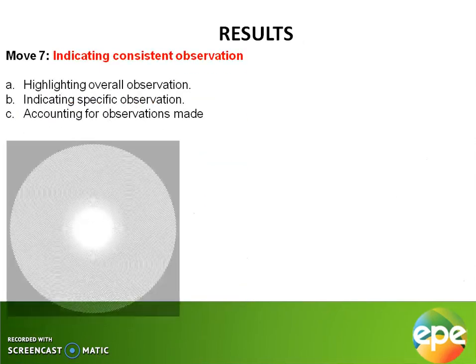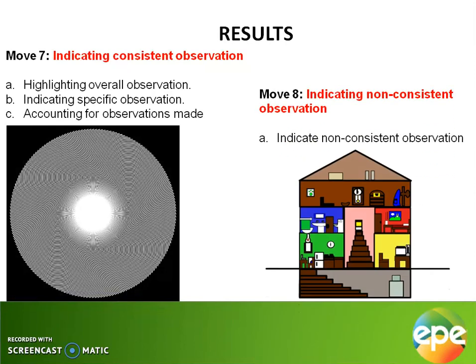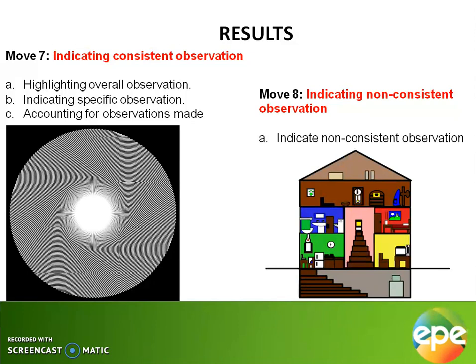The results of any scholarly written article either agree or disagree with already existing knowledge or observation. Moves seven and eight help us understand this. In move seven, observation helps you indicate consistent observations, while in move eight, non-consistent observations are addressed. You begin to see the overall observation explained, the specific observations highlighted, and explicit accounts given, establishing either new knowledge or indicating the direction of new research.